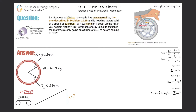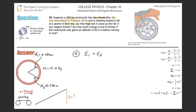The motorcycle is traveling at 30 meters per second and will travel up a hill. We want to find the final height. Neglecting friction means no energy is lost, so the energy inherent initially will equal the energy inherent finally. The initial state is just before the motorcycle reaches the ramp, and the final state is when it reaches the top of the hill.